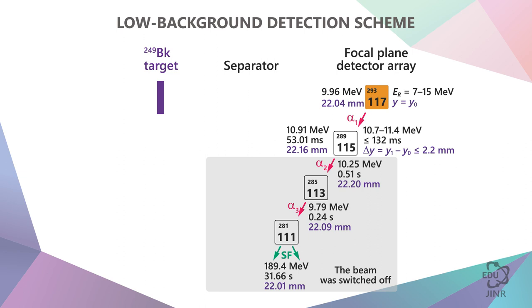It may be that after the first alpha decay, nothing else will happen. Then the device will continue to work normally. The system is made in such a way that if during this time interval a recoil nucleus enters the detector and starts decaying, then the beam is automatically switched off.